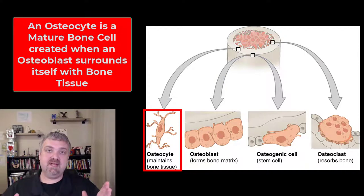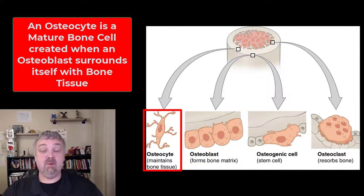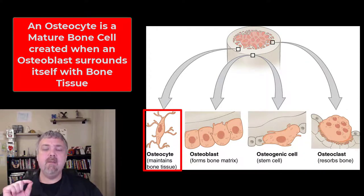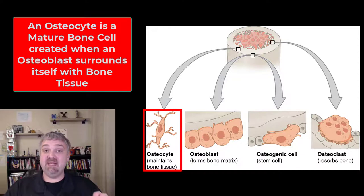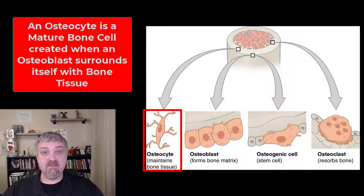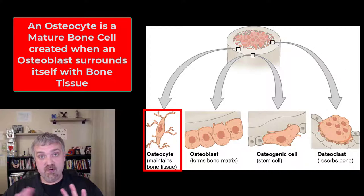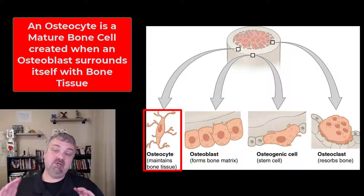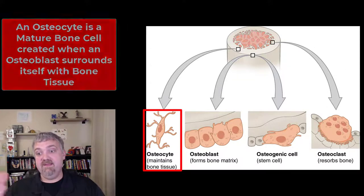Notice that an osteoprogenitor cell made an osteoblast that became an osteocyte — that's why I say that even though there are four types of bone cells, these three are really just one continuum. Osteocytes maintain bone as their primary function, but they can also help repair damaged bone — they can actually revert back to being an osteoblast or even an osteoprogenitor cell.